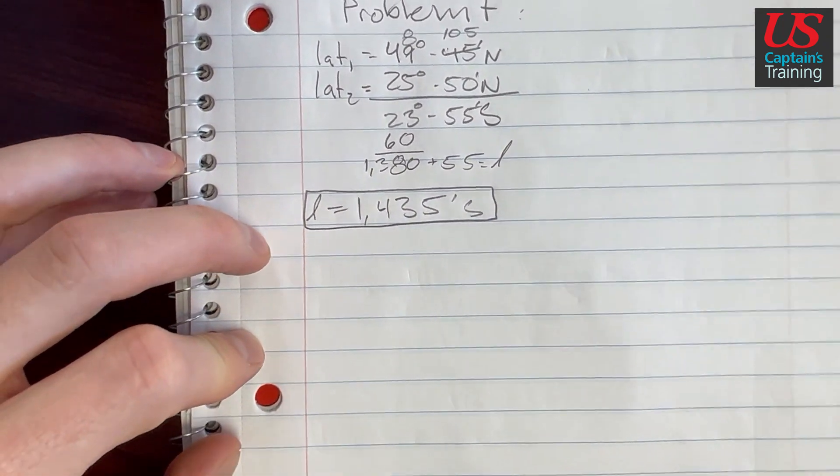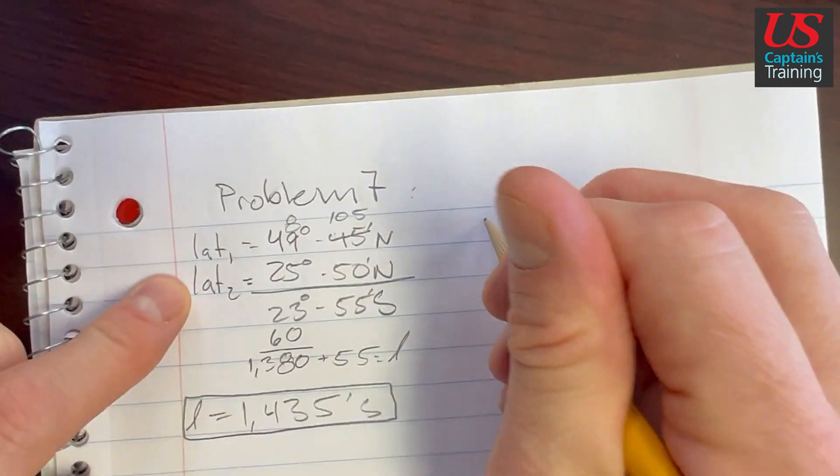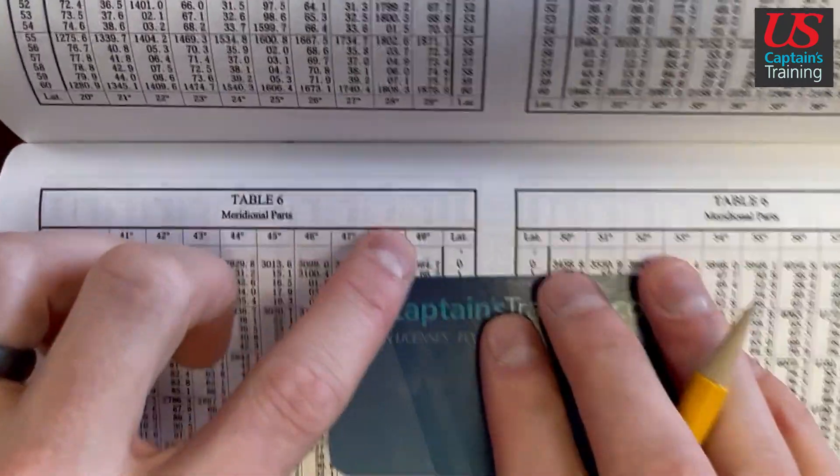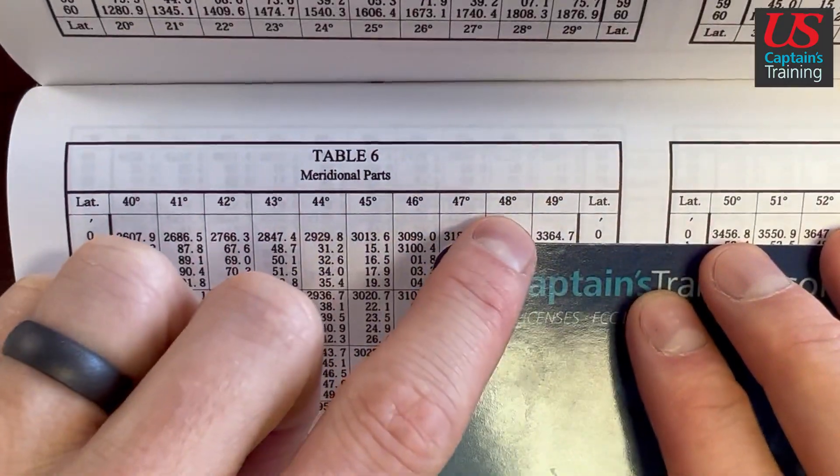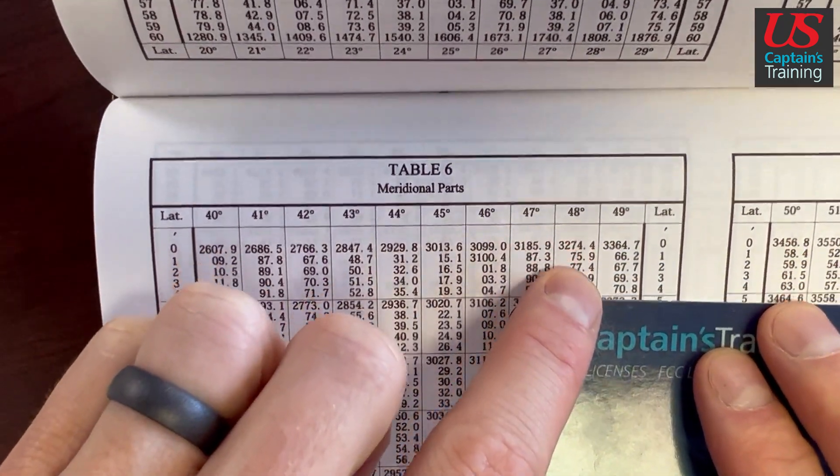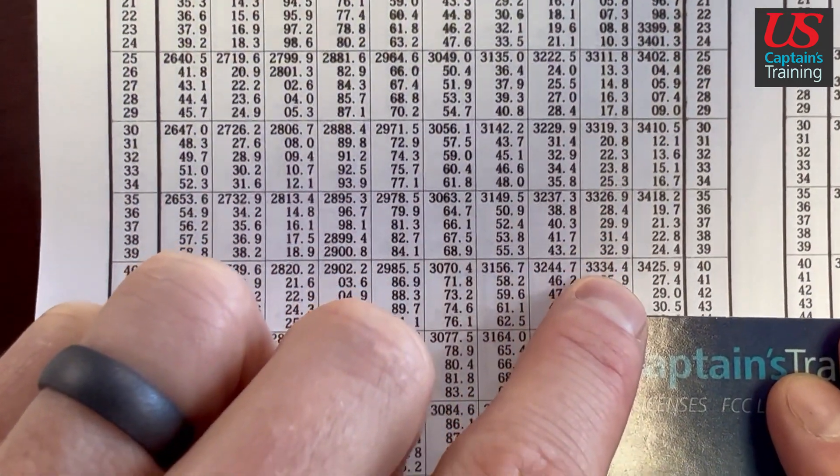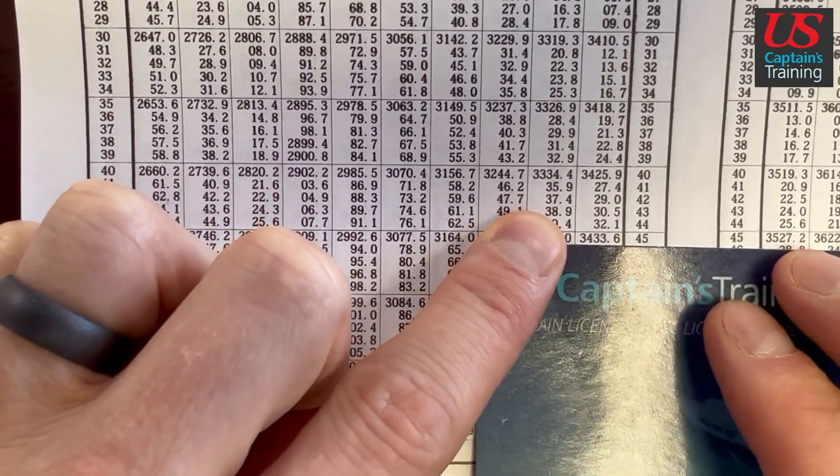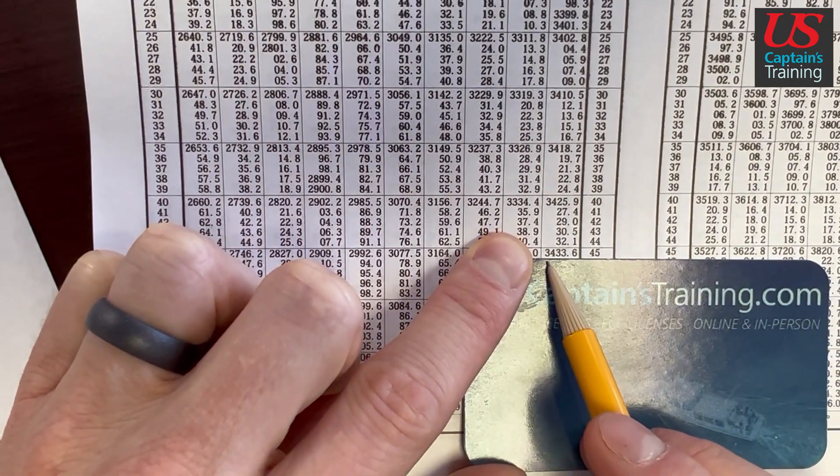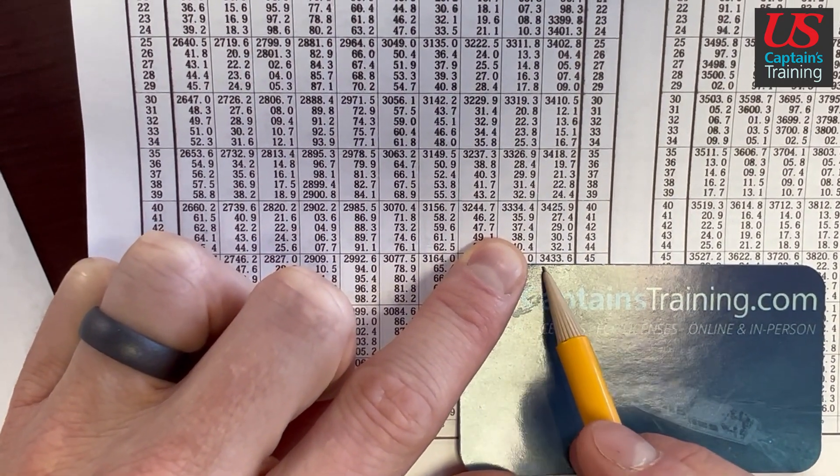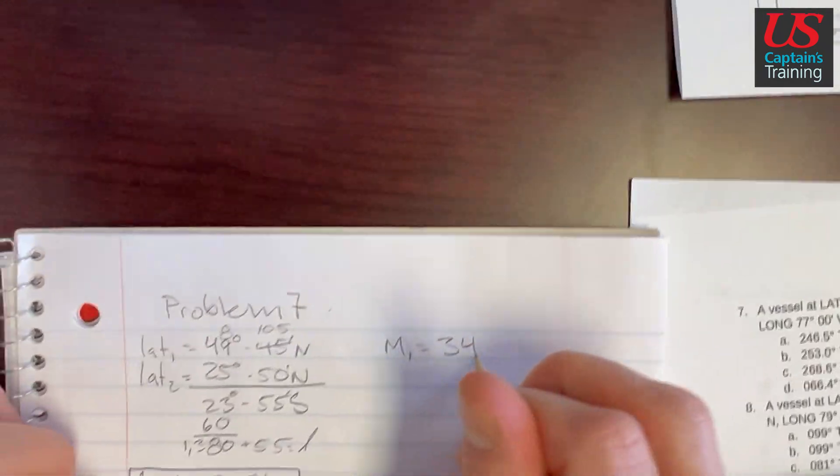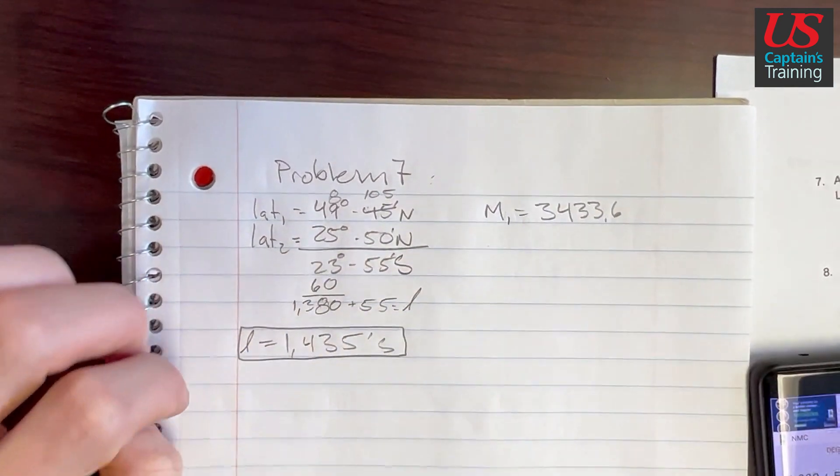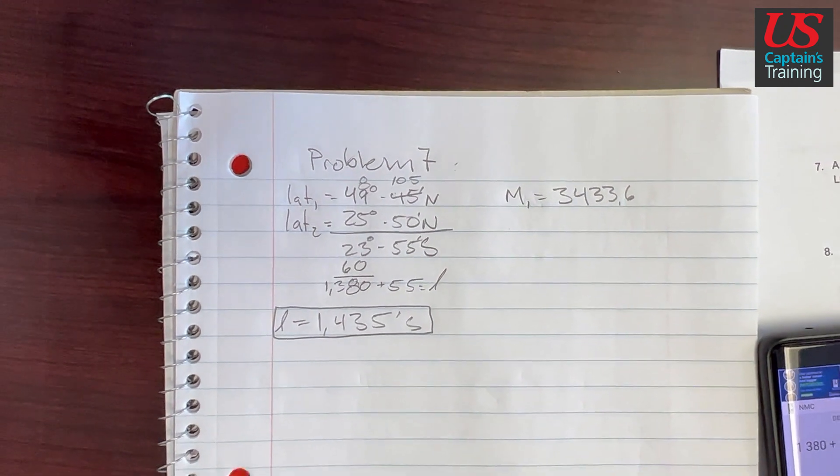Now what we need to do is find the meridional parts of these latitudes. So that's m1. And we jump over to this table. We go 49, 45 north. Here's 49 degrees. And then we find the minutes on the side. So 49, 45, cruise down to 45. Okay, so 49, 45, 3433.6.